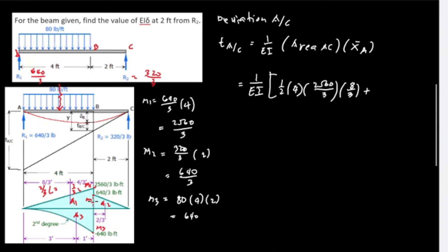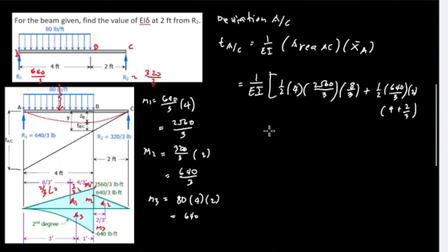For Area 2, it is also a positive triangle with height M2 = 640/3: one-half times 640/3, with base from B to C of 2 feet. The centroid of Area 2 is one-third of 2, or 2/3, from C. So the distance from A to the centroid of Area 2 is 4 plus 2/3. For Area 3, it is negative; using the second-degree formula: one-third times base 4 times height 640.